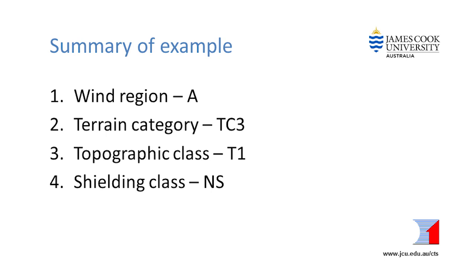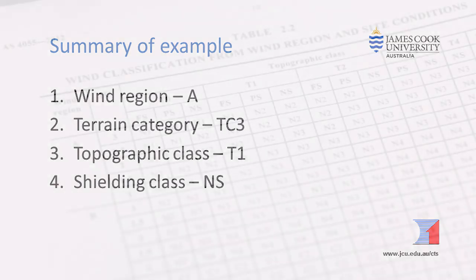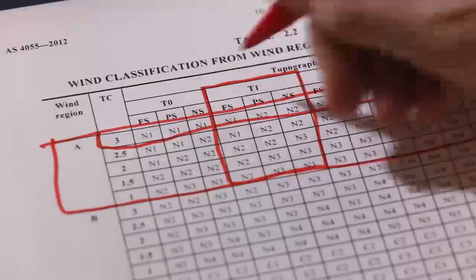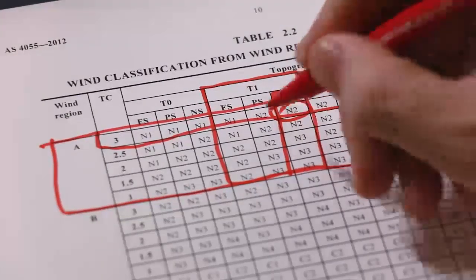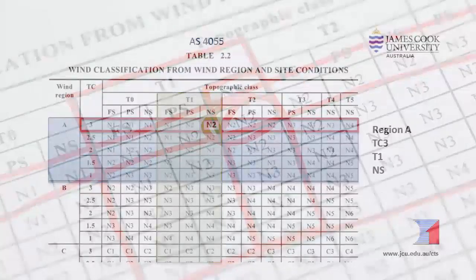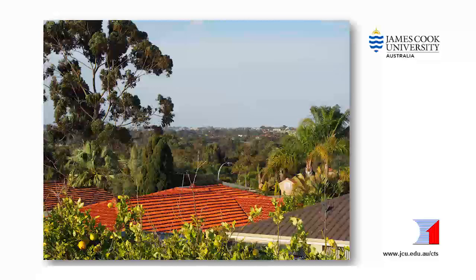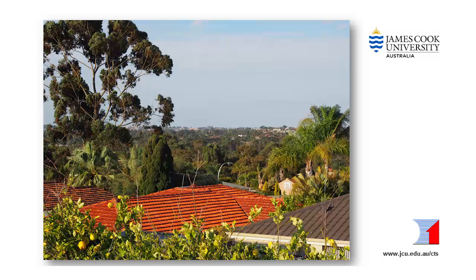So far we have worked through steps 1 to 4 and have the basic information to look up the wind classification. Step 5 is to use Table 2.2 of AS4055 to determine the wind classification for the site from the wind region, the terrain category, the topographic classification, and the shielding class. For this example, Table 2.2 shows that for wind region A, terrain category 3, topographic class T1 with no shielding, the wind classification for the house is N2. In this case the terrain category is the same in all directions, but the steepest slope and the most open shielding are in different directions. Wind classifications determined using AS4055 are not directional — they are the same for wind in any direction. As a check, the view from the site is open but not over the whole suburb, so N2 seems appropriate.